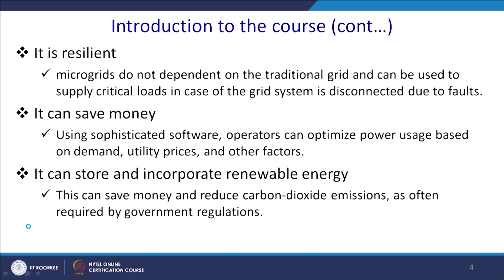Why is the microgrid resilient? Microgrids do not depend on the traditional grid and can supply critical loads if the grid is disconnected. Recall that in 2012, India had a catastrophic failure because UP drew a huge amount of power and the whole India grid collapsed. But if you have a smart isolated microgrid, it can survive and cater to all critical loads. Also, it can save money by eliminating long transmission lines and their maintenance costs.